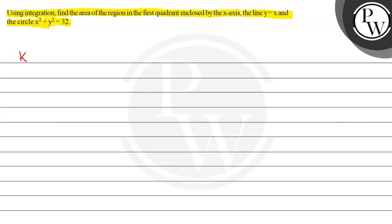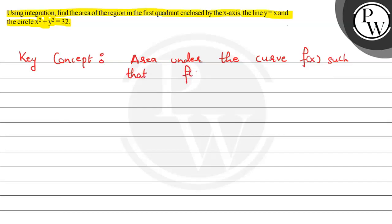Let's note down the key concept for this problem. The key concept is area under the curve f(x), such that f(x) is greater than or equal to zero for values of x in the interval a to b, and the area in this interval is A equals the integral from a to b of f(x) dx. This key concept will help us solve the problem.